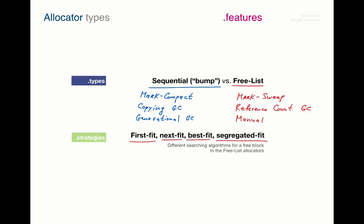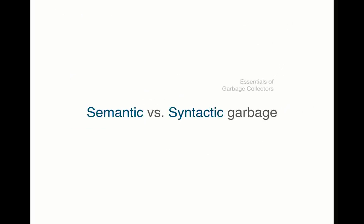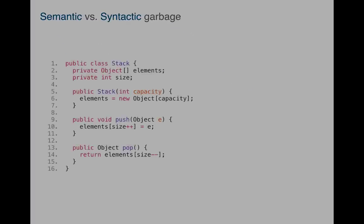Now when we know how to allocate objects, let's move forward and see how these objects become garbage. We start the discussion with considering two types of the garbage, known as semantic and syntactic garbage, and which we'll be discussing in the next video.